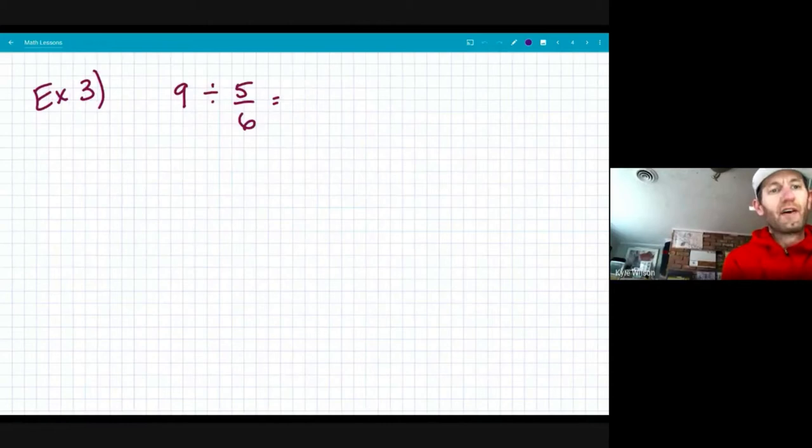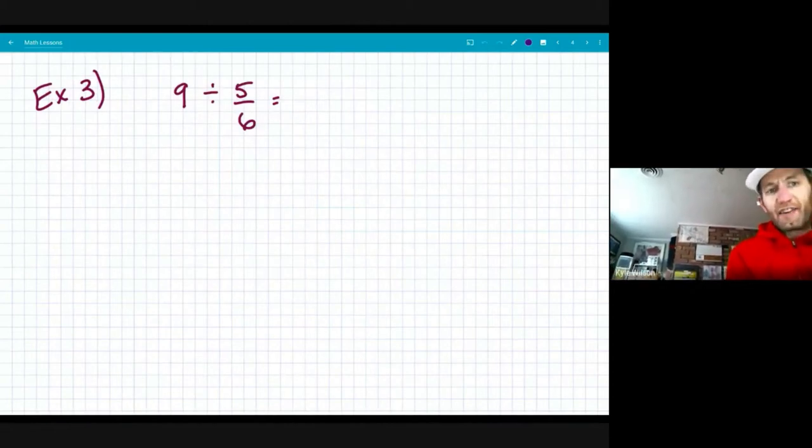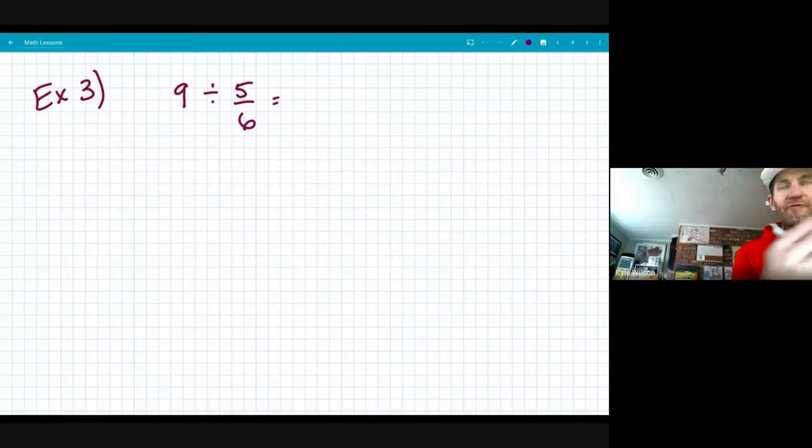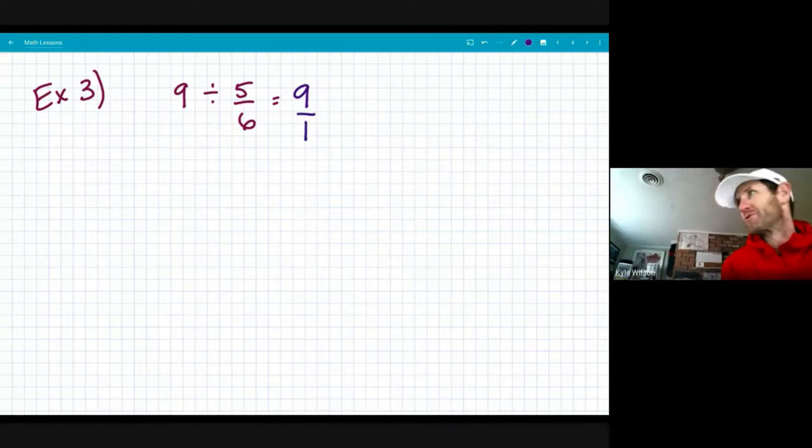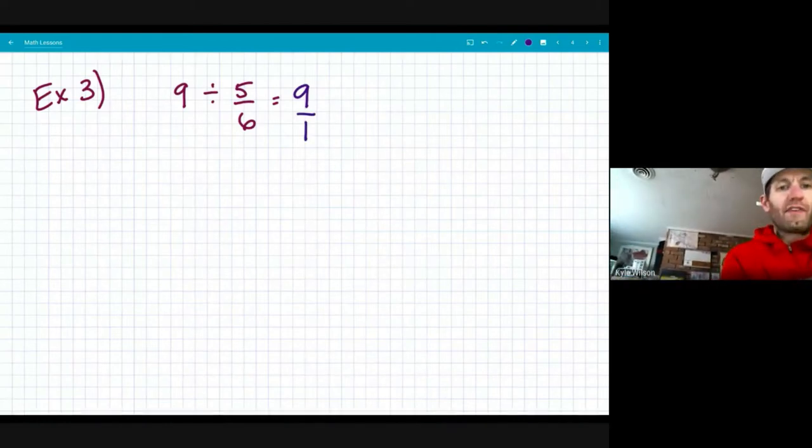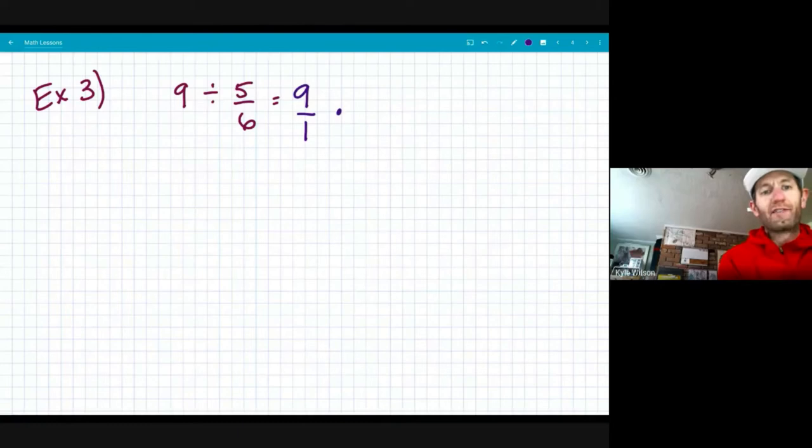On to the third example. So this one, I have nine of something, and I'm going to be dividing it into parts of five sixths. But I'm going to take that nine and keep it the same, and just for good measure, make it nine over one. Then I'm going to multiply by the reciprocal of five sixths, which is six over five.